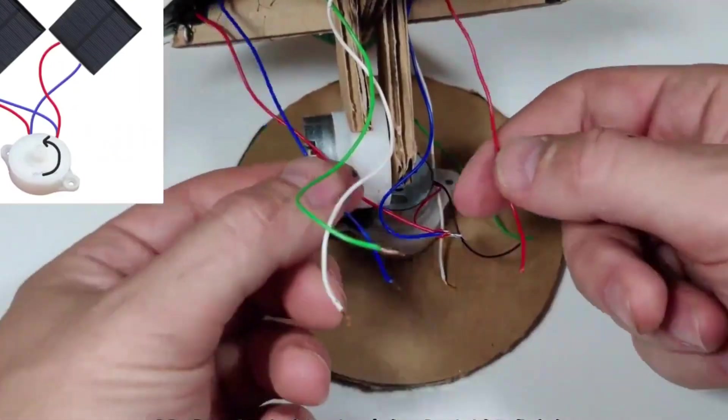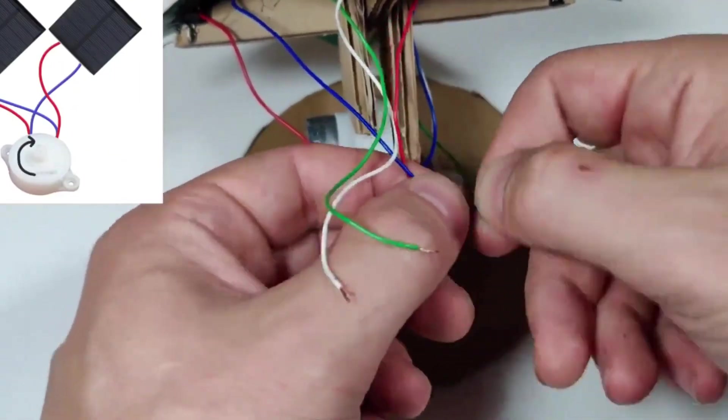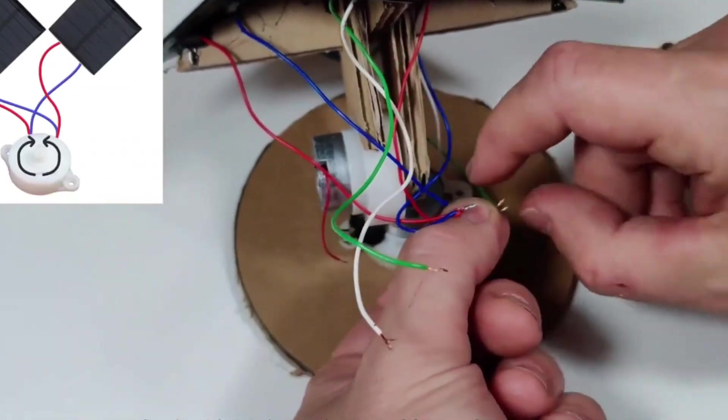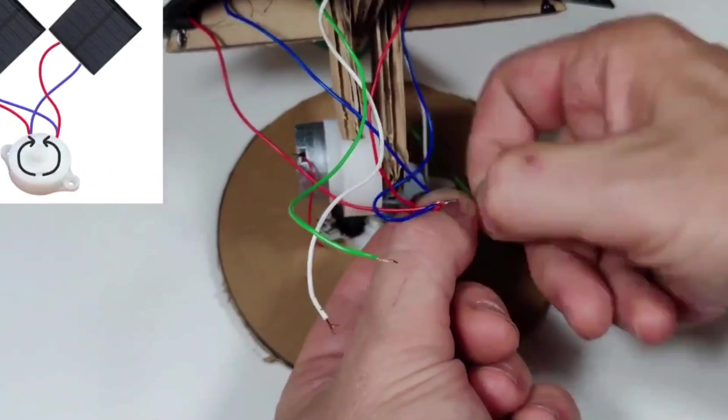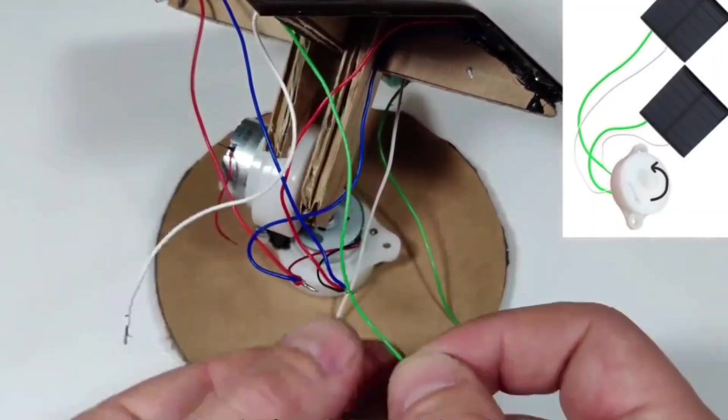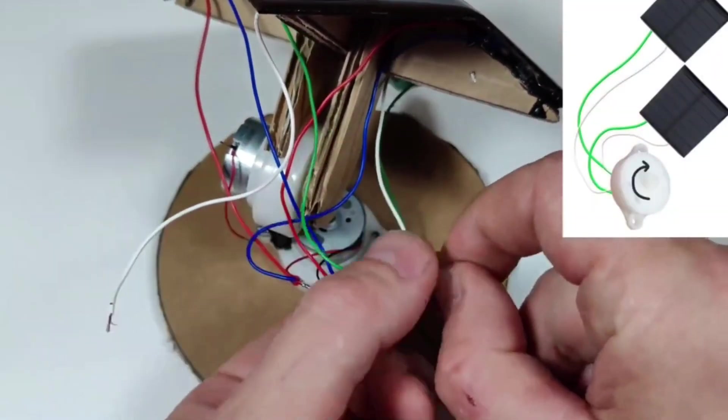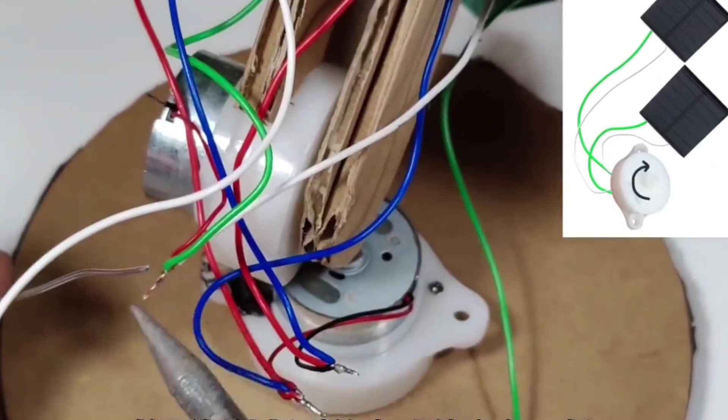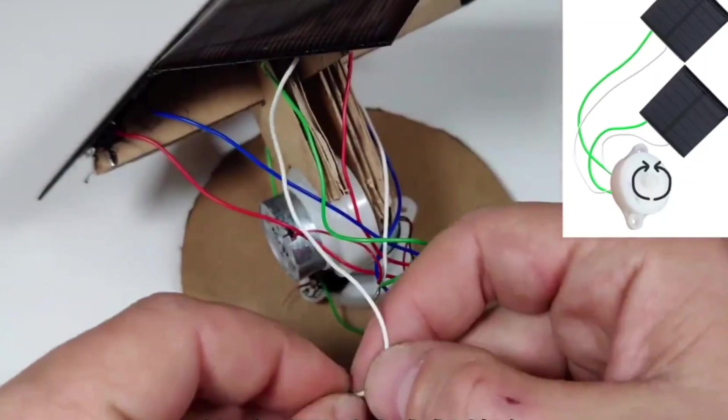This works because the sunlight hits the two panels at different angles. That creates a voltage difference, which makes the motor turn toward the brighter side. The same wiring method is used for the top and bottom solar panels, which control the vertical motor. Connect their wires in opposite polarity and then connect to the motor.